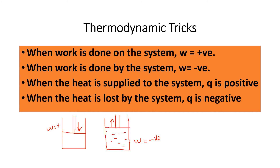When heat is applied to the system, Q is positive. If you apply some heat to the system, that is positive. If the heat is lost by the system — after some time the heat is automatically being lost — that becomes negative. When the system is losing heat, it is negative. Keep these four tricks in mind: work done on the system is positive; system doing work is negative; giving heat to the system is positive; system losing heat is negative. With these four tricks, we can easily solve first order, second order, exothermic reactions, and everything.